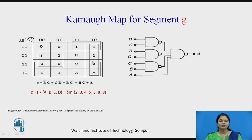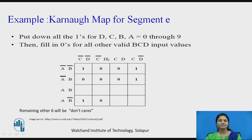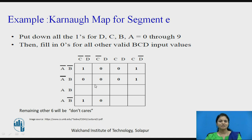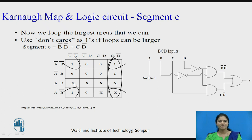Now we will see one example of how the 7-segment decoder works — specifically how segment E works for all BCD numbers. Here ABCD is the BCD number going through 0 to 9. We will fill that K-map. Here we can see that at positions where segment E should be on, we have put 1, and at other positions we have put 0. Wherever there is no defined value, we are having don't care.